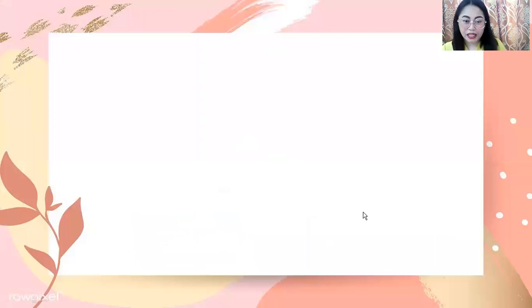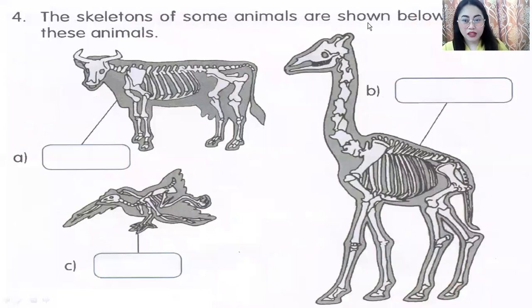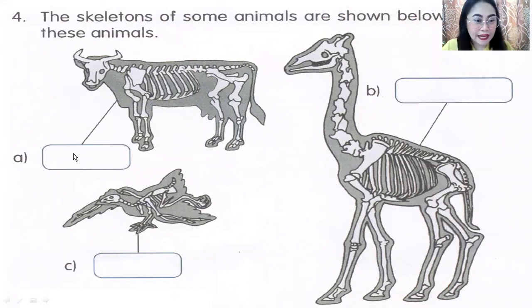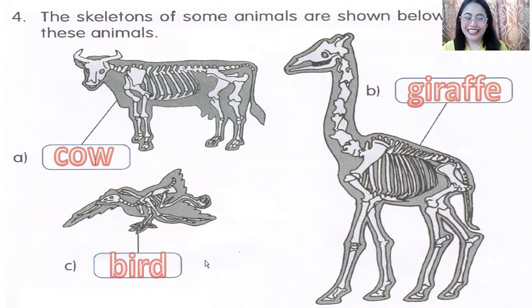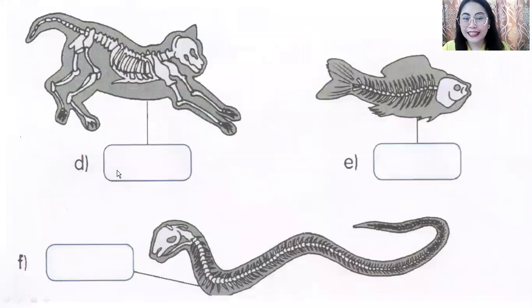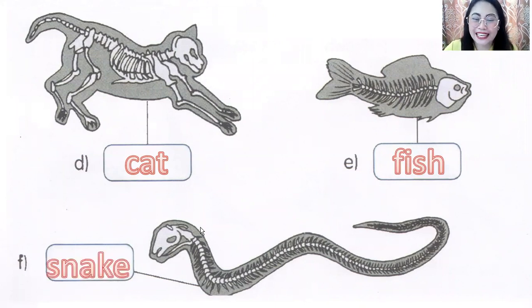Open page 29. The skeletons of some animals are shown below — name these animals. Letter A is cow. Letter B is giraffe. Letter C is a bird. Letter D is cat. Letter E is fish. Letter F is snake.